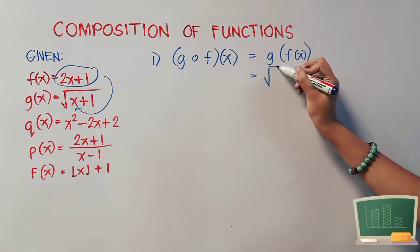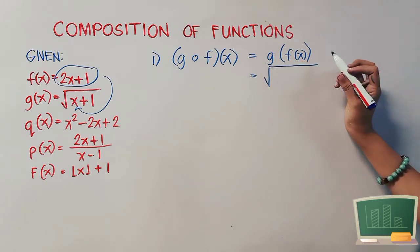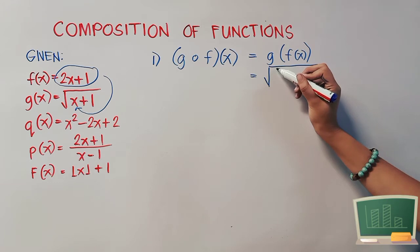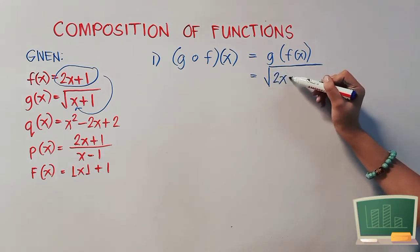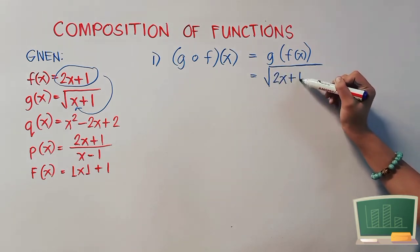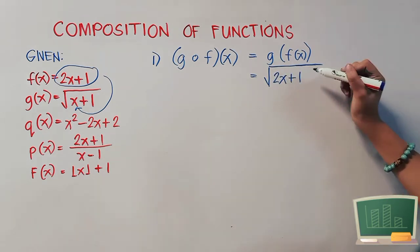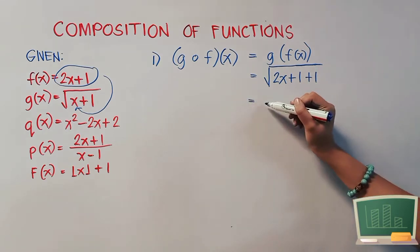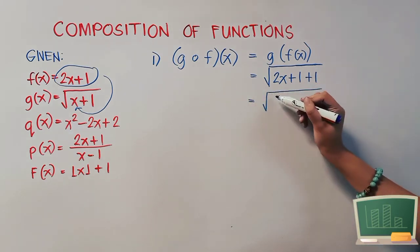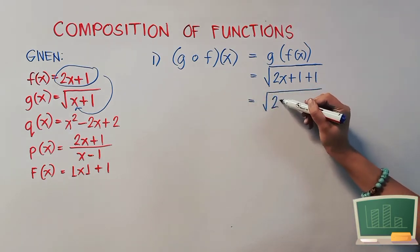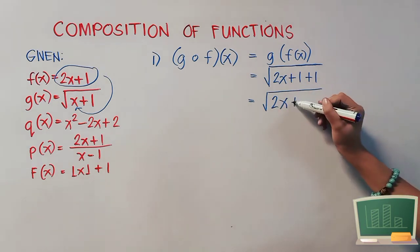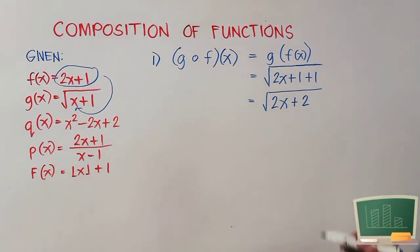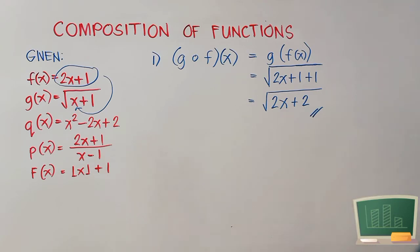So that would be the square root of — our x is 2x plus 1 — and then we will just copy plus 1. That gives us the square root of 2x plus 1, plus 1, which equals 2. And this will be our final answer.